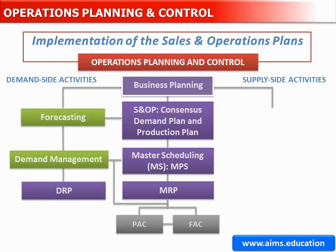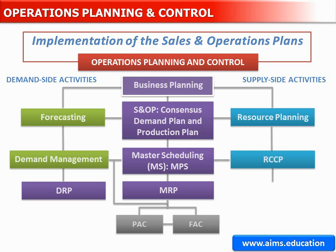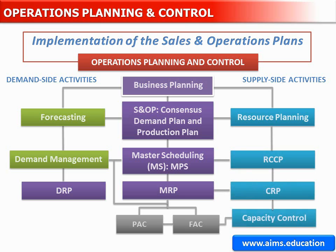The distribution requirements planning process involves determining the inventory replenishment needs at branch warehouses. The high-level supply side activities start with resource planning, which determines the need for capital investments or modifications to capacity. The remaining activities in the right column address where the evolving plans are feasible from an operations capacity standpoint.